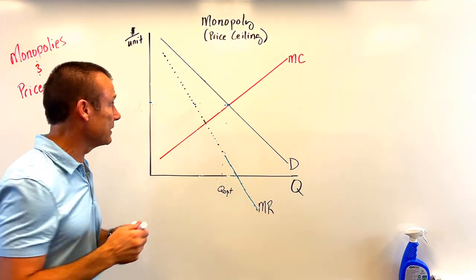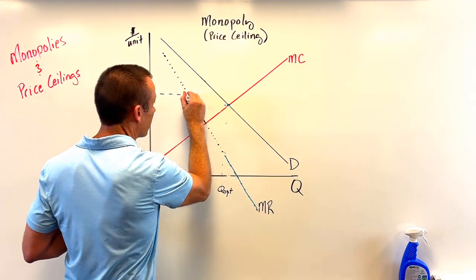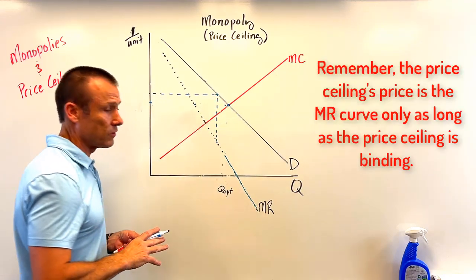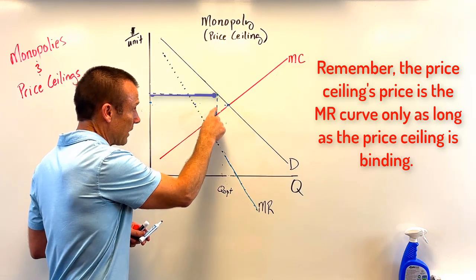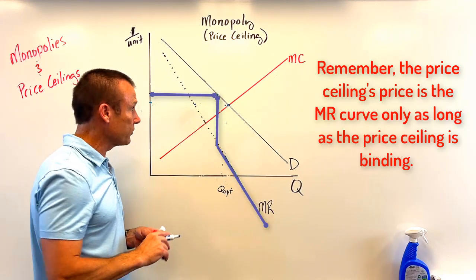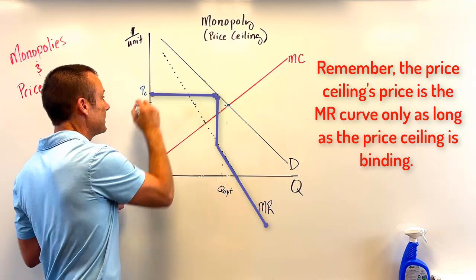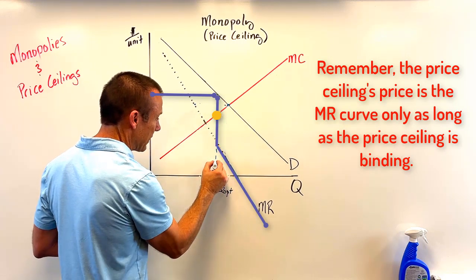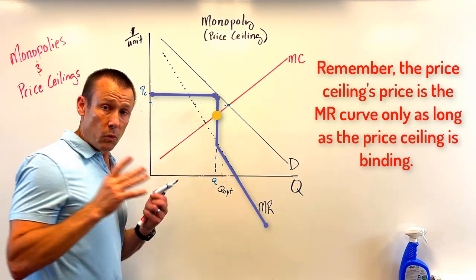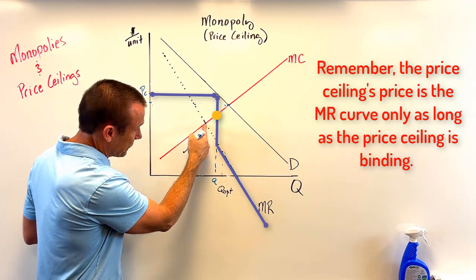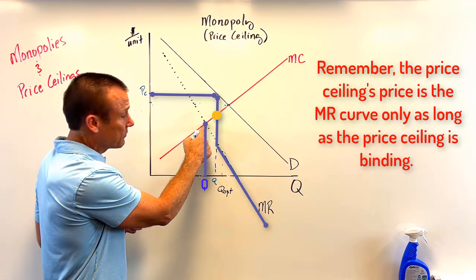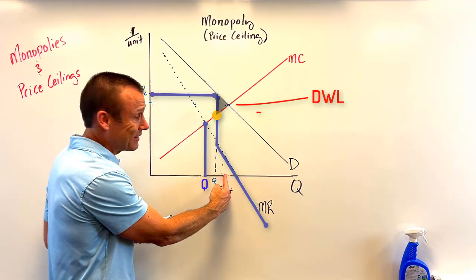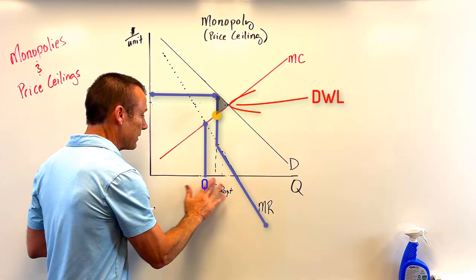If the price ceiling is placed a little bit higher, it goes to there. As soon as it hits the demand curve, I drop down to that original MR curve — so that is now my MR. Looking for MR equals MC: they intersect right there, so output is right there. Output actually increased compared to the unregulated situation — the old MR and MC used to intersect at the old, lower output. I got more output, but I did not get all the way to Q_opt.